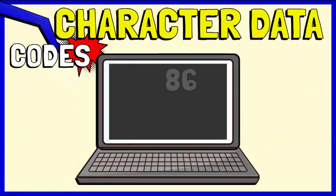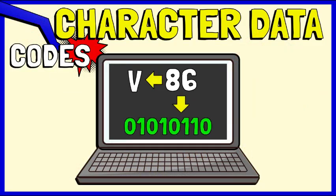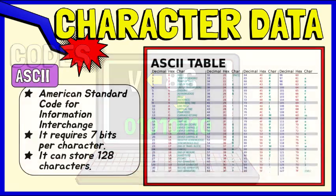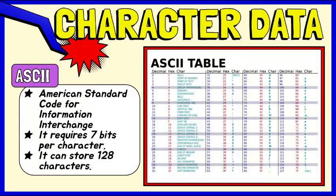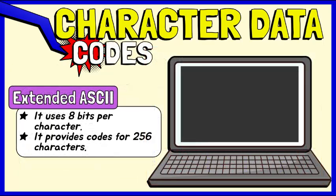A code where each number represents a character can be used to convert text into binary. One code we can use for this is called ASCII, which stands for American Standard Code for Information Interchange. It requires only 7 bits for each character and can store 128 characters, including uppercase letters, lowercase letters, punctuation symbols, and numerals. A superset of ASCII called Extended ASCII uses 8 bits to represent each character, allowing Extended ASCII to provide codes for 256 characters.